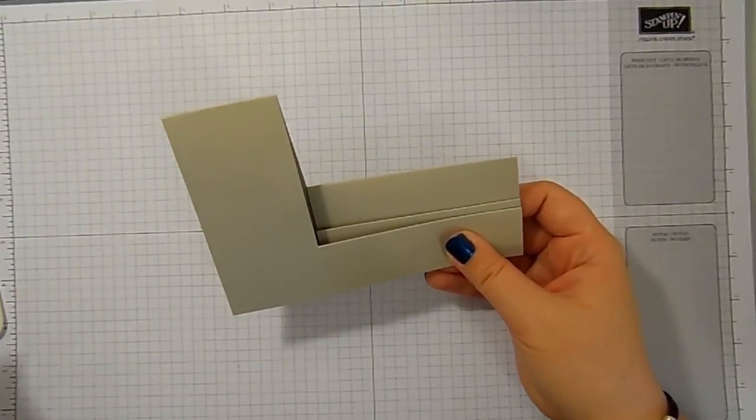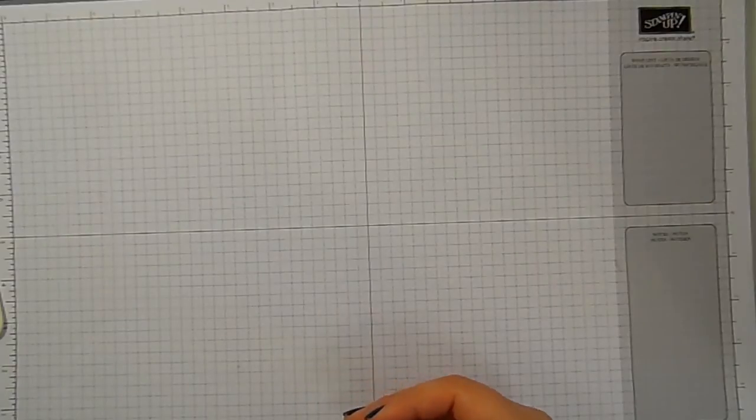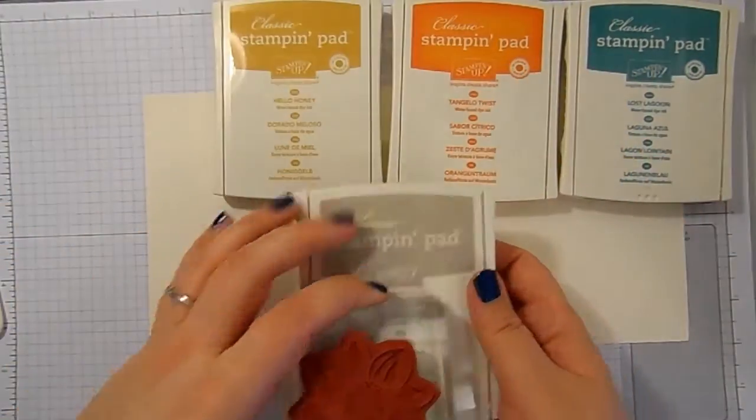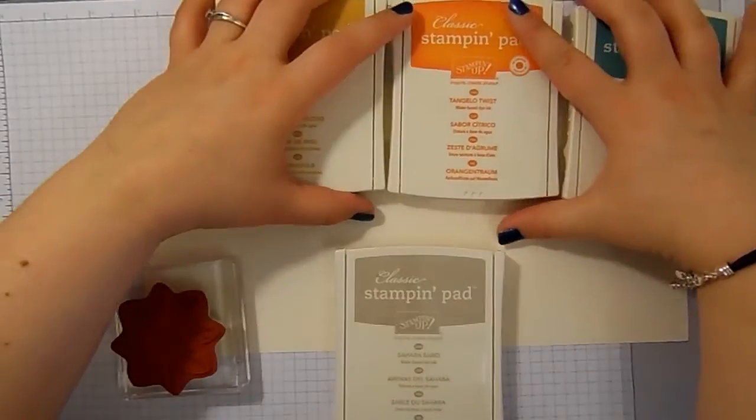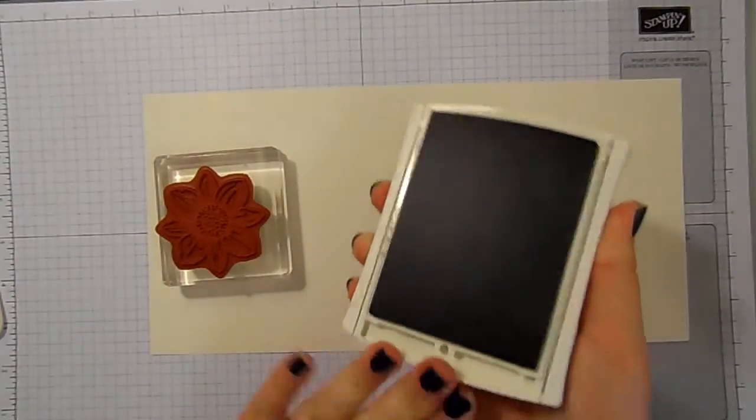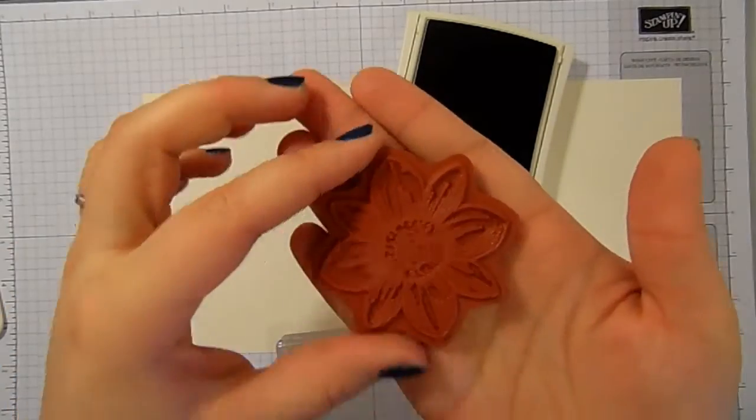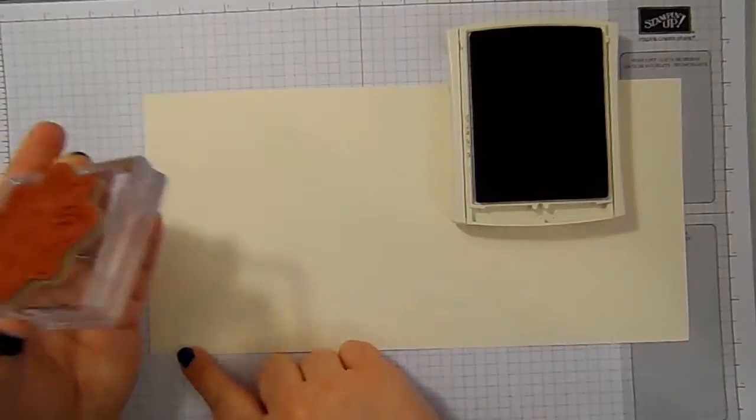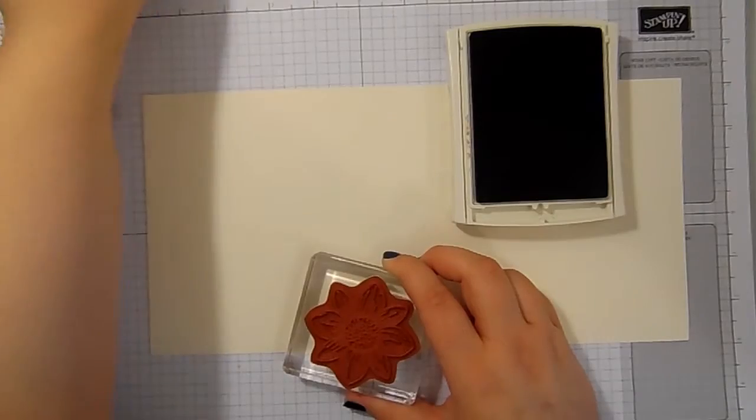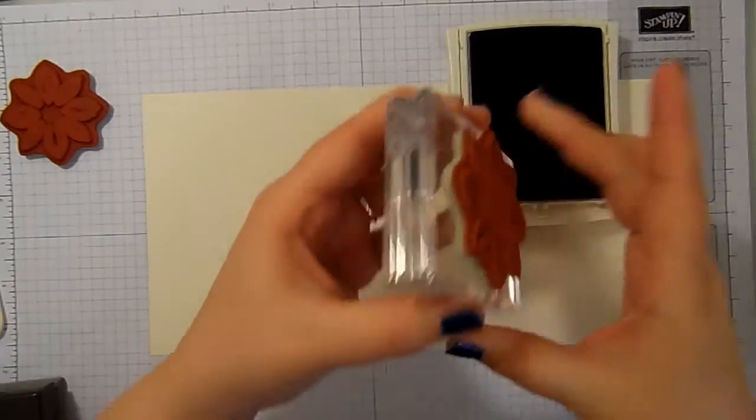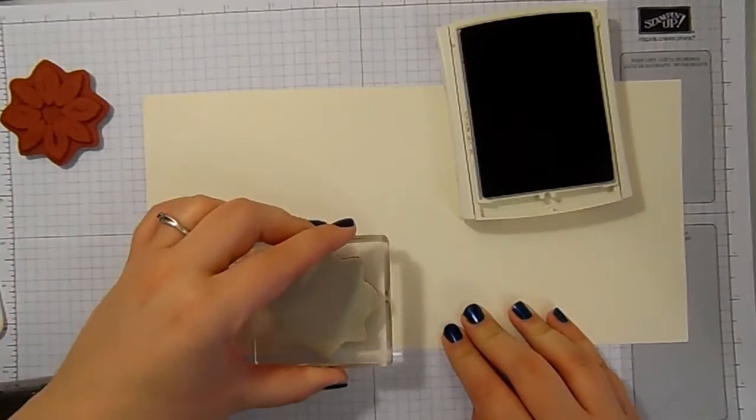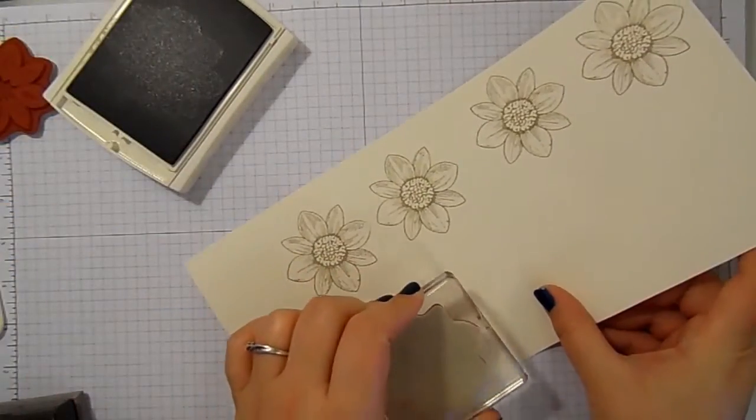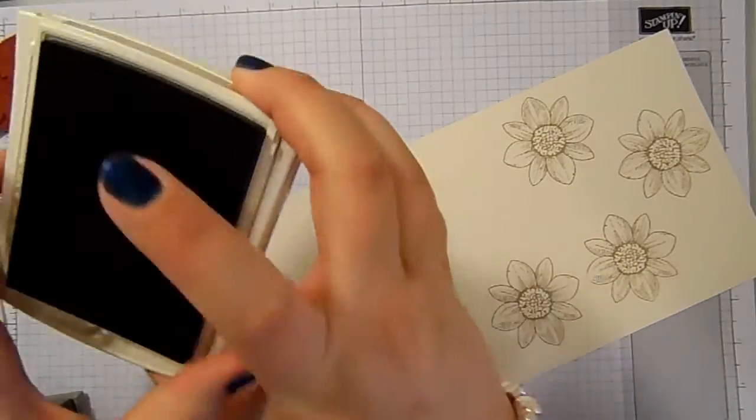And then we're going to attach our flowers. For my flowers, I've got a piece of Very Vanilla, and I've got Hello Honey, Tangelo Twist, and Lost Lagoon, and Sahara Sand. We're going to take the detailed flower stamp first and our Sahara Sand ink. My top tip for this is, when you've got your stamp, position it on your block so that one of the big petals is at the bottom. Because you want to stamp with that big petal on the edge of your cardstock so that it will work with our flower medallion punch. So I'm going to stamp six of these. And it doesn't matter really how messy they are at this stage.